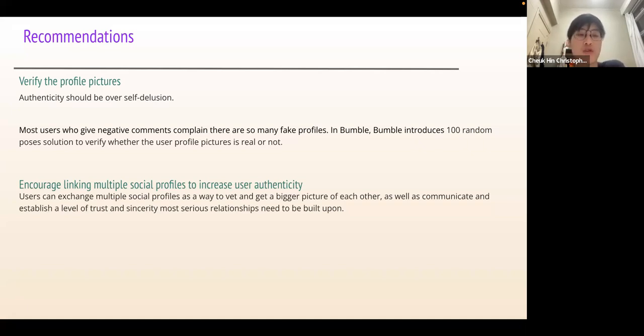The second solution is to encourage linking multiple social profiles to increase user authenticity. Users can exchange multiple social profiles such as Tinder, Facebook or Instagram as a way to connect and get a bigger picture of each other, as well as to communicate and establish a trust level. Since certainly most serious relationships need to be built on trust.